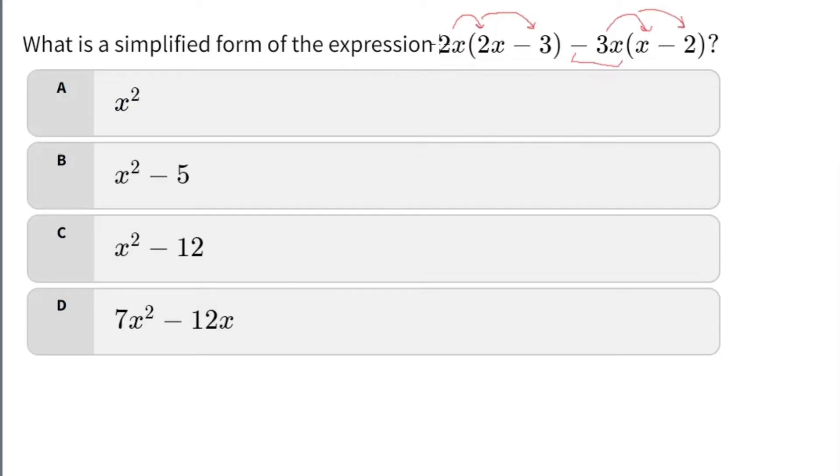Firstly, what is 2x times 2x? We know that that is 4x squared. And now what's 2x times negative 3? That is negative 6x. Next, we're going to be combining this negative 3x into this bracket. So negative 3x times x is negative 3x squared. And then we have negative 3x times negative 2, which is negative times negative. Remember, it's a positive, so it's plus 6x.